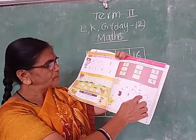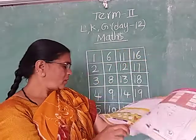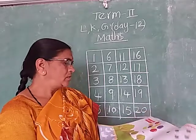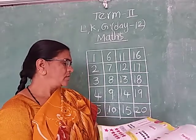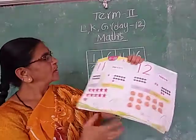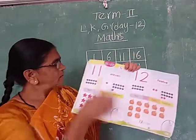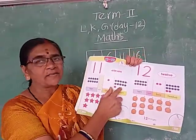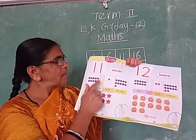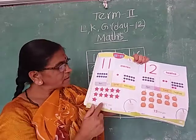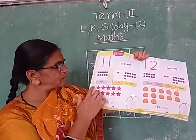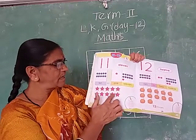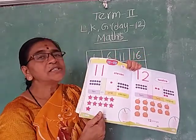In order. In the home box. Next — number 11. 11 stars. 10 and 1 makes 11. How many stars are there here? 1, 2, 3, 4, 5, 6, 7, 8, 9, 10, 11 — 11 stars.